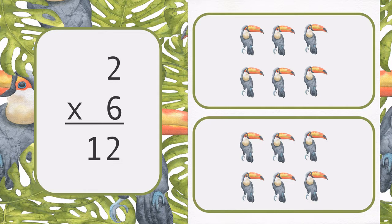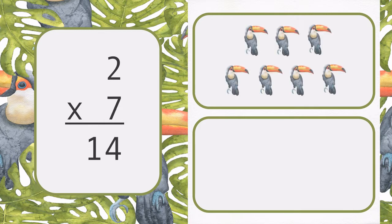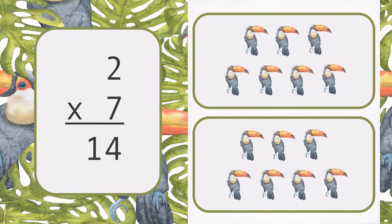There are two groups of 6. 2 times 6 is 12. There are two groups of 7. 2 times 7 is 14.